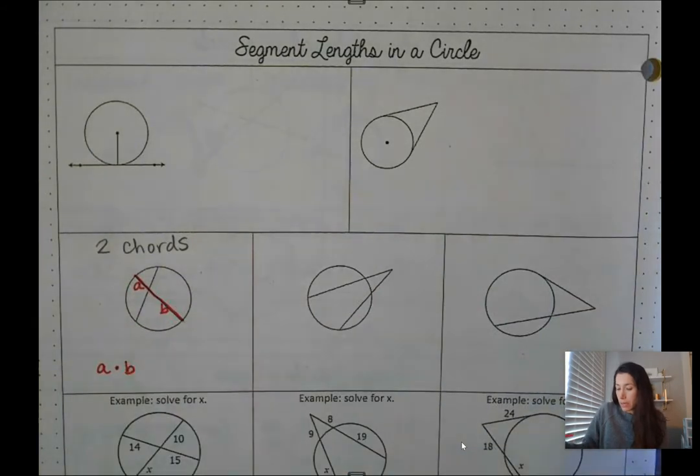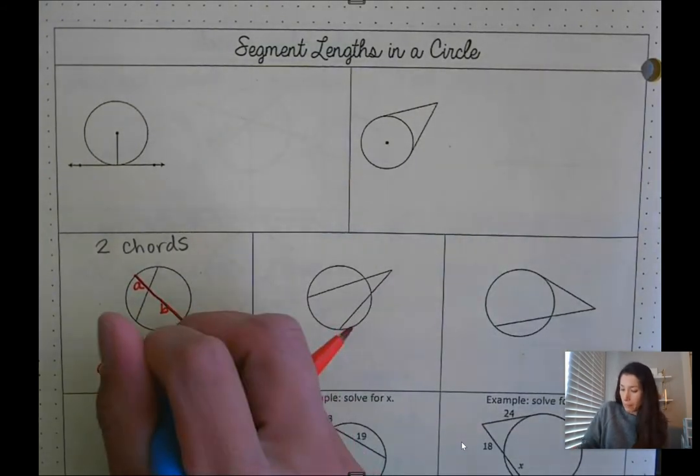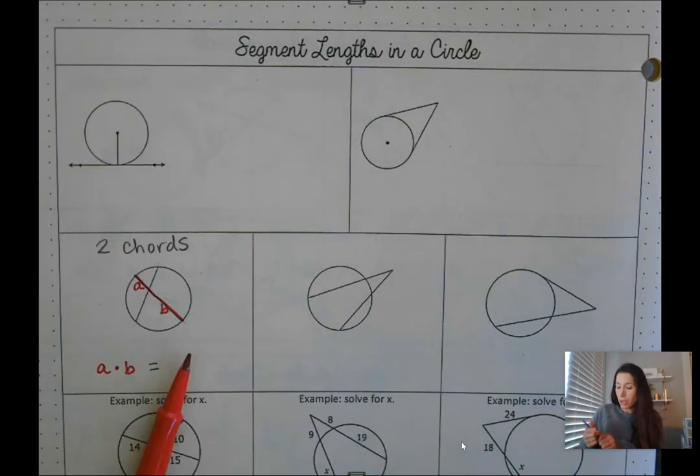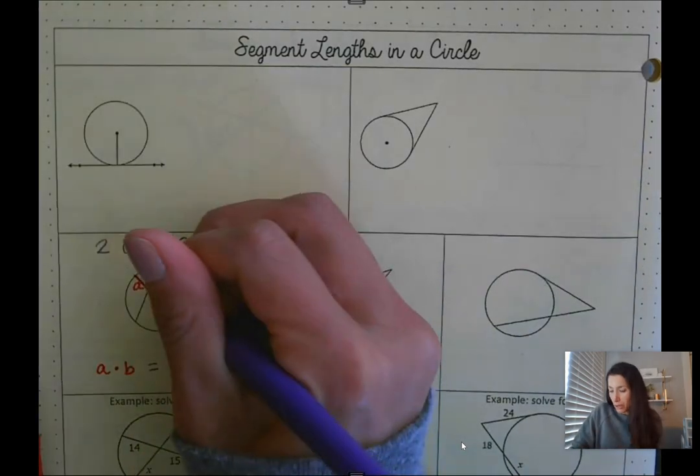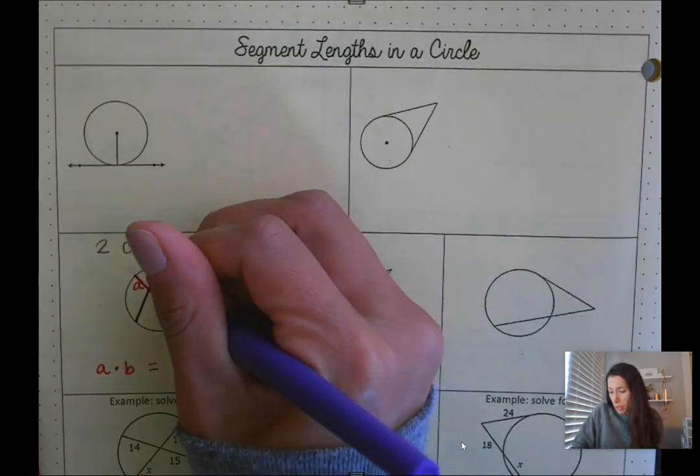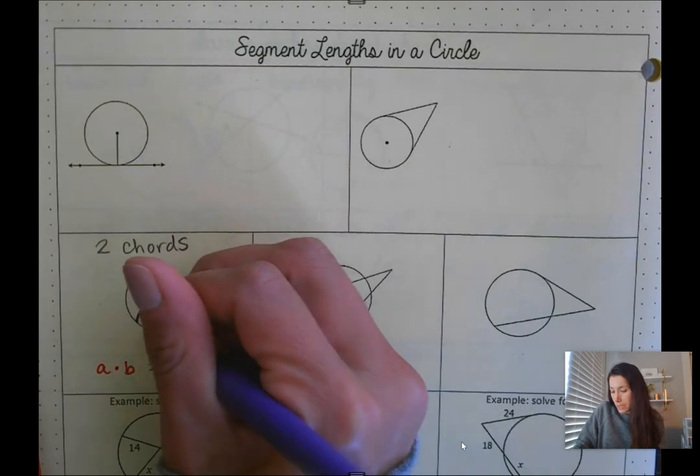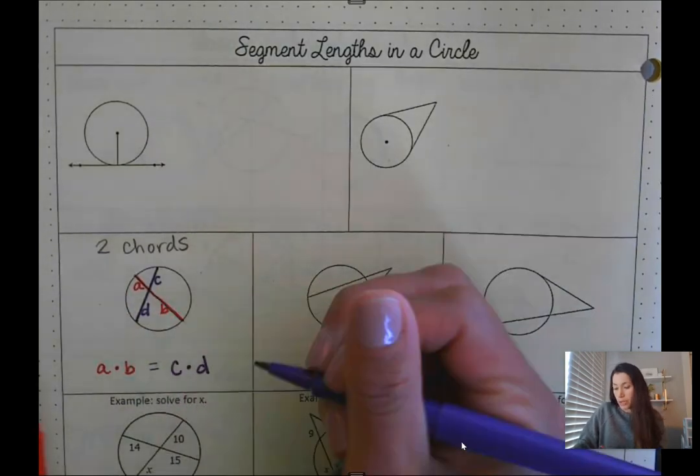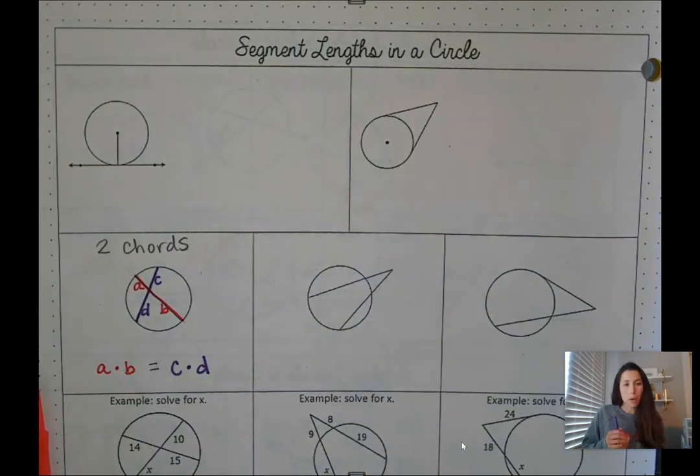This chord has segments on it A and B, so that means A multiplied by B is going to equal my other chord. I'll call one part C and one part D. C multiplied by D, and you can use parentheses if you want instead as well.